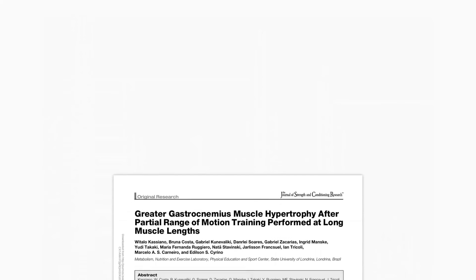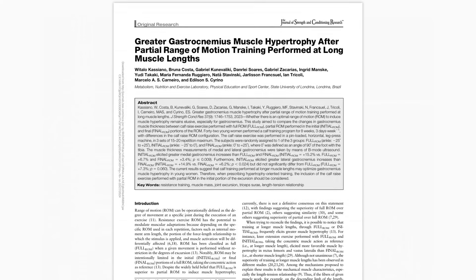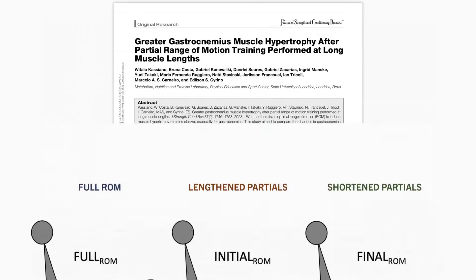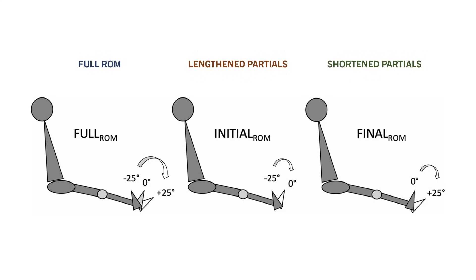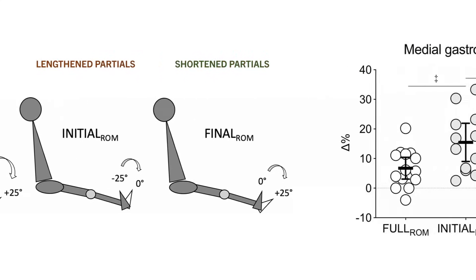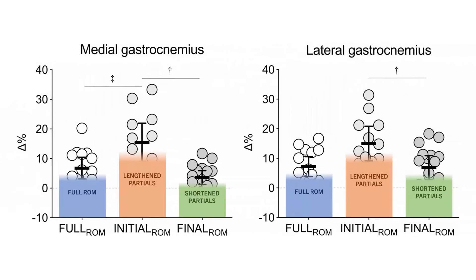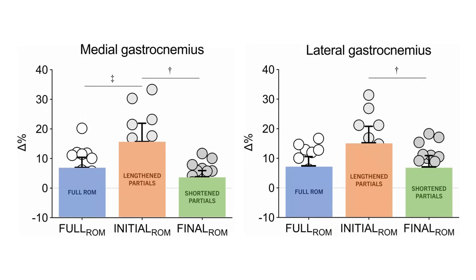Another study compared the effects of performing calf raises with either a full range of motion, partial range in the lengthened position, or partial range in the shortened position. It was found that the lengthened partials produced the greatest increases in gastrocnemius muscle thickness, with the full range of motion and shortened partials being slightly inferior.